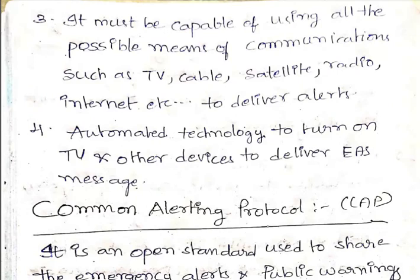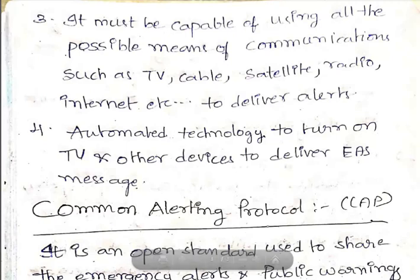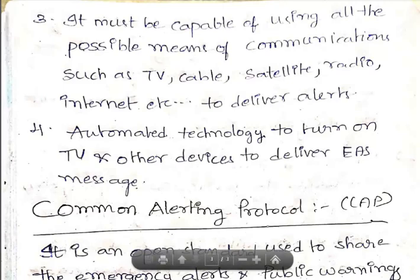The system must be capable of using all possible means of communication — such as TV, cable, satellite, radio, and internet — to deliver alerts. It should also use automated technology to turn on TVs and other devices to deliver Emergency Alert System messages. This means that during an emergency, the TV will automatically turn on and the emergency alert will be displayed on whatever channel you are watching.